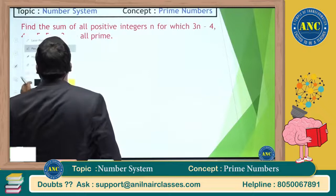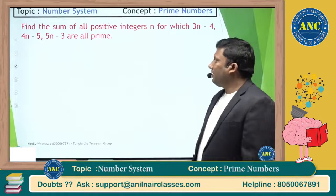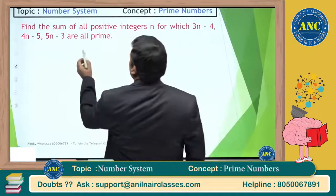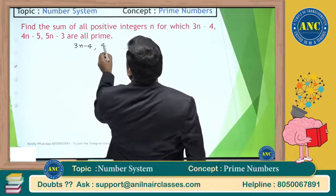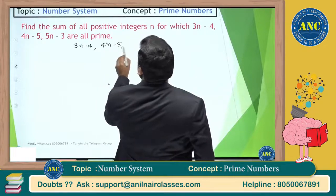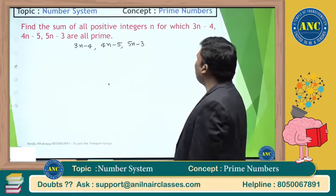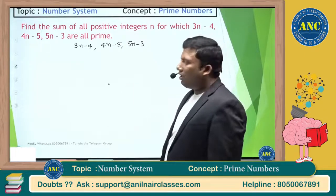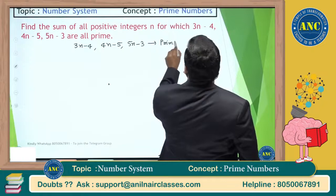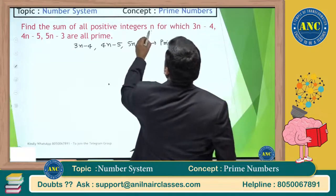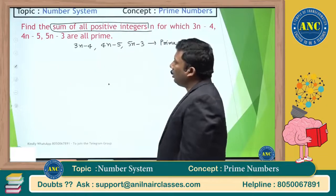Try to solve this question. Find the sum of all positive integers such that 3n minus 4, 4n minus 5, and 5n minus 3 are all prime numbers.